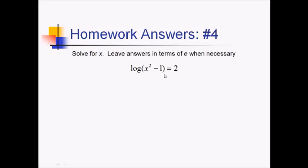For number 4, we've got log base 10 of x squared minus 1 equals 2. So we're going to raise 10 to both sides. That leaves us with x squared minus 1 equals 10 to the 2. So that's 100 over on the right side. We can add the 1 to that right away. We've got to square root both sides now. Don't forget the plus or minus. So this will give us x equals plus or minus square root of 101.